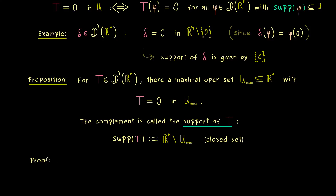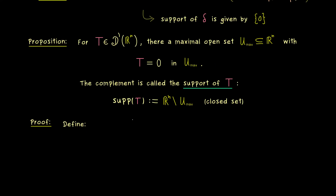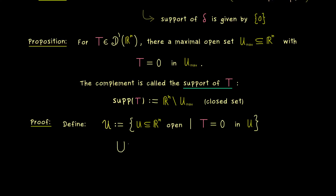The support of a distribution is well defined once we prove this proposition, which means we just have to find such a maximal open set. This is not hard: we look at the whole collection of open sets U with the property that T vanishes in U — call this collection script-U. One natural candidate for a maximal set is to take the union of all sets in script-U, which we call U_max. This must be the maximal set because all possible open sets are already included in the union.